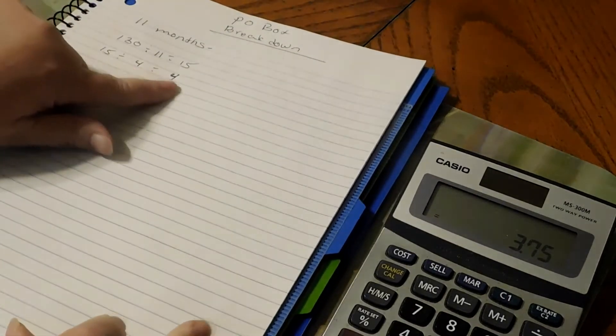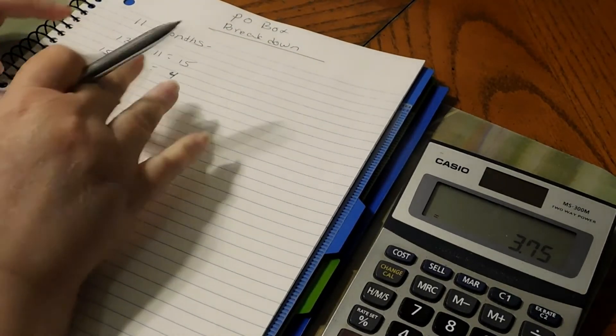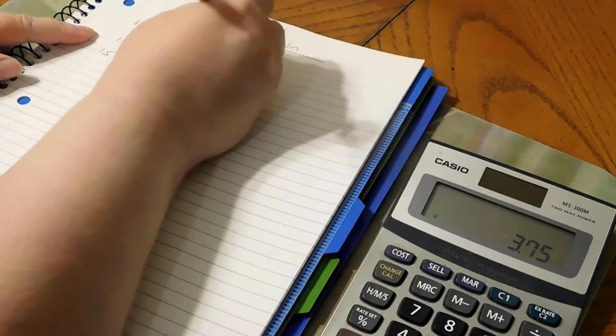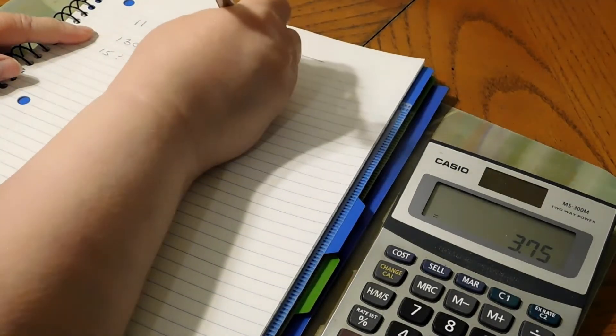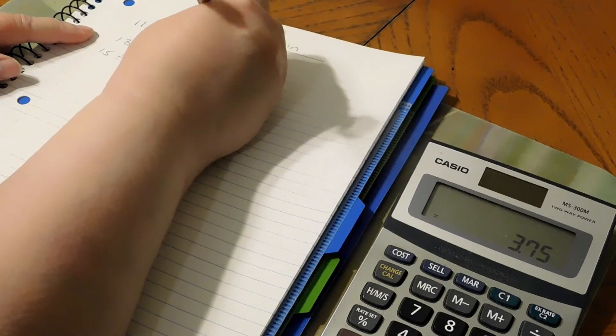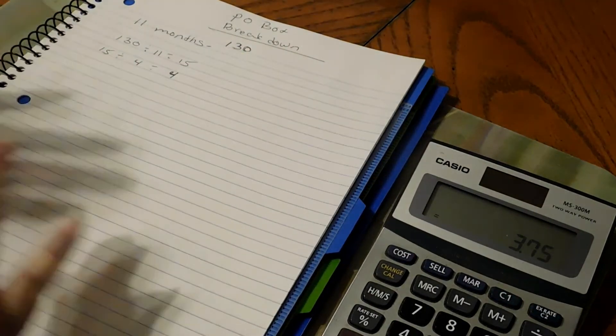So we're going to go $15 divided by four and then we're just going to go $4. So $4 is what you would have to put in every week to get $130 to pay for your P.O. Box for the full year.